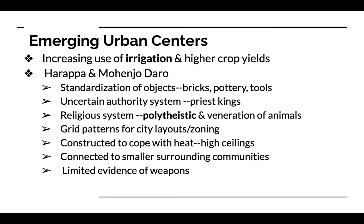Harappa and Mohenjo-Daro are the sites of two big archaeological excavations that have been ongoing since the 1920s. In the Indus Valley, you see the standardization of objects — bricks, pottery, and tools all made with uniformity, looking the same across finds. A complex society had to organize the production of these things, so it's a sign of being sophisticated and advanced that you can have uniform bricks, pottery, and tools.